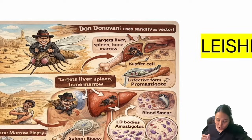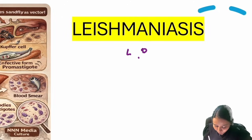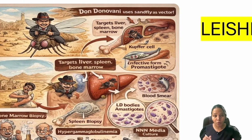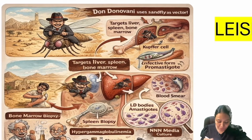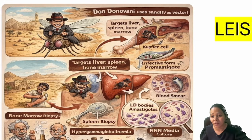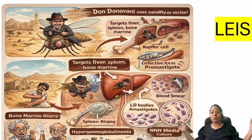Leishmaniasis is caused by Leishmania donovani. When I say donovani, I think of a 'don'. This don is in a desert. The desert is filled with sand, so his vehicle is going to be a sand fly. The vehicle is nothing but a vector. So Leishmania donovani is a don who is using a sand fly as his vector.